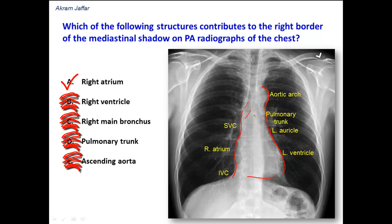The ascending aorta is present in the middle and does not imprint itself on the borders of the heart, whether the right or left border. So, the correct answer is the right atrium, which contributes to the right border of the mediastinal shadow.